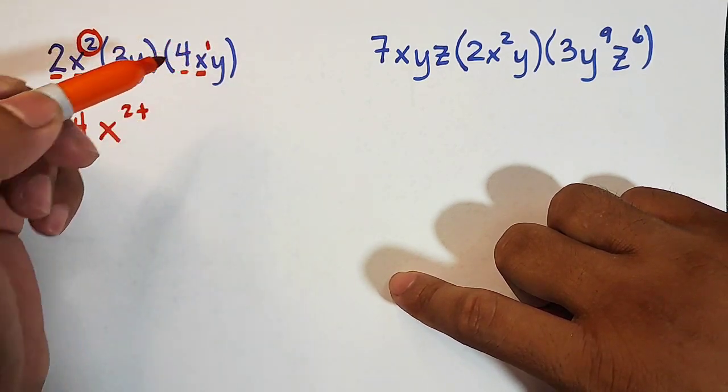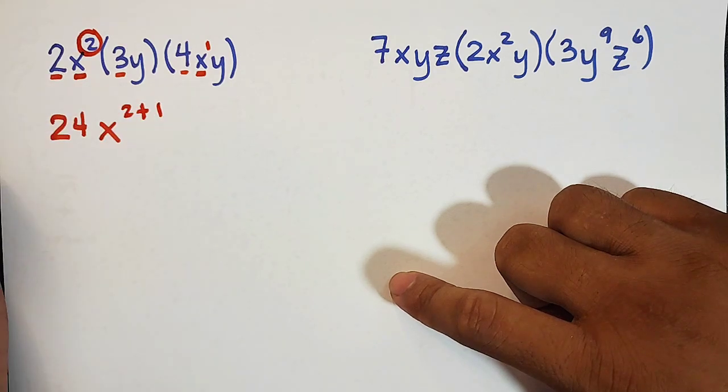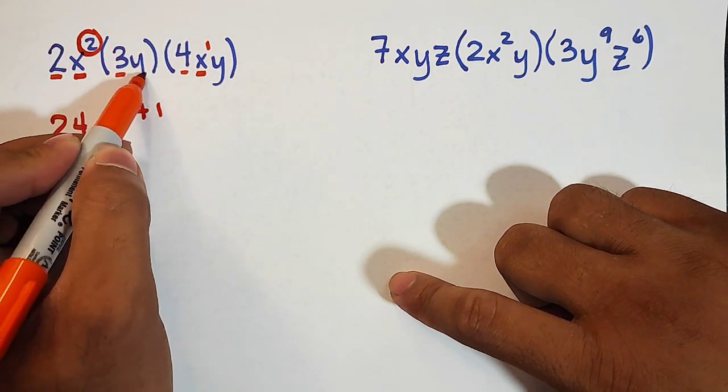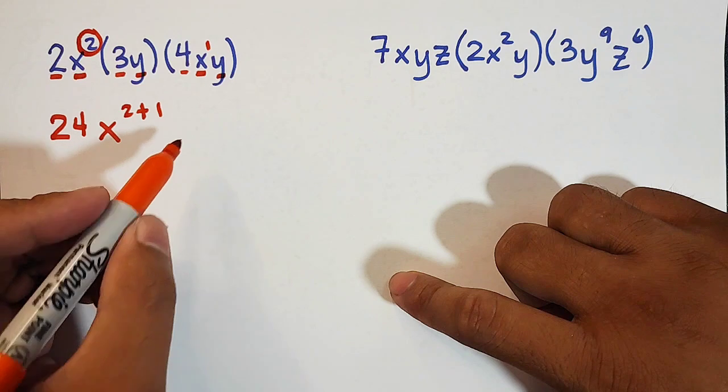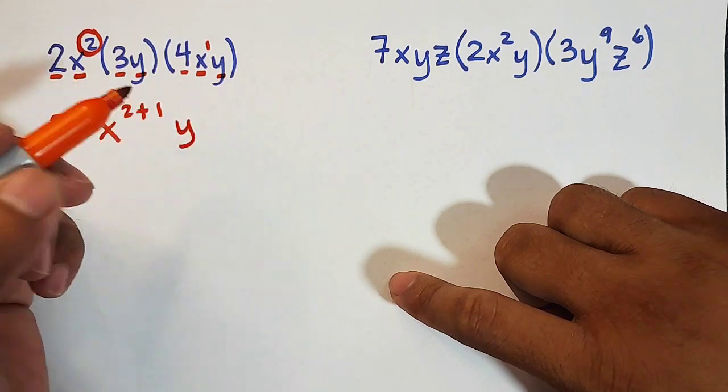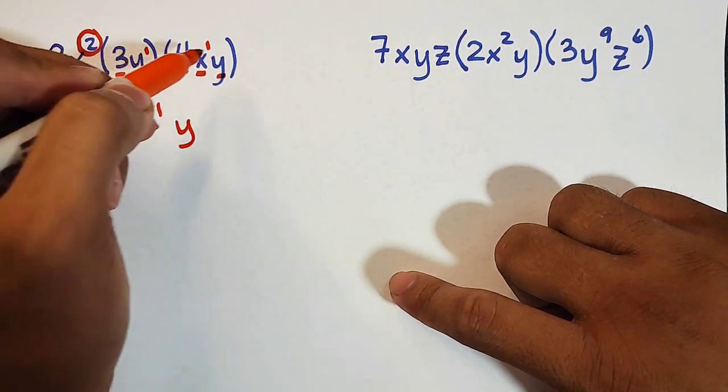So we have 2 plus the exponent of x, which is invisible 1, that is plus 1. So for the variable y naman, we have y times y. We will copy the variable y and add exponents 1 and 1.